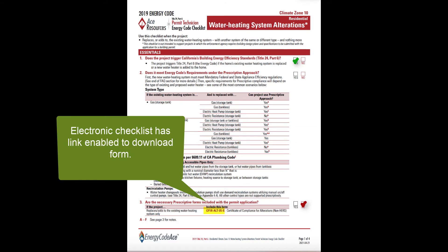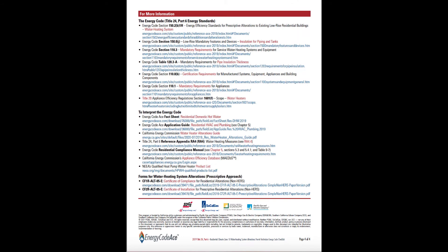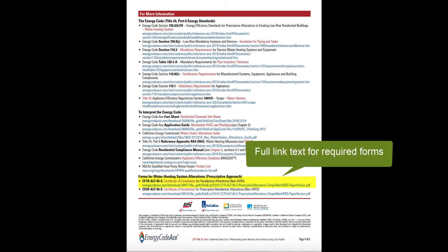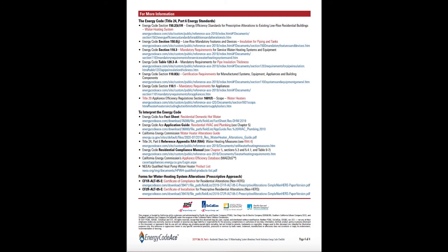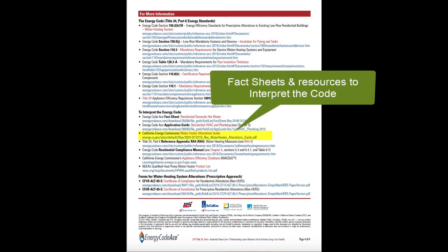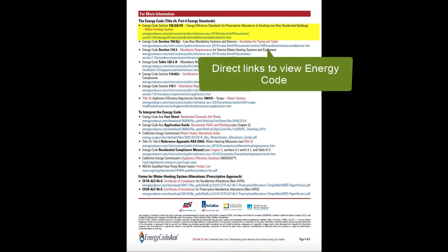The electronic version of this checklist has a link enabled to download the form. If you are working from a paper copy, or plan to give a printout to the permit applicant, note that the full link text for the form is also shown on page 4. This page also offers other helpful resources for permit applicants, such as a fact sheet about water heating alterations and direct links to view energy code sections applicable to the project.